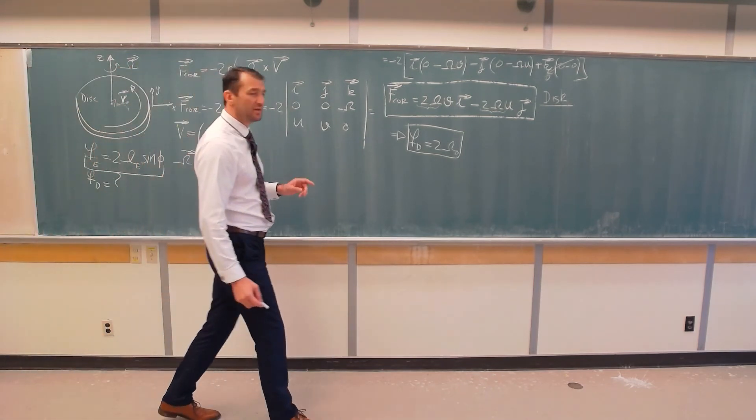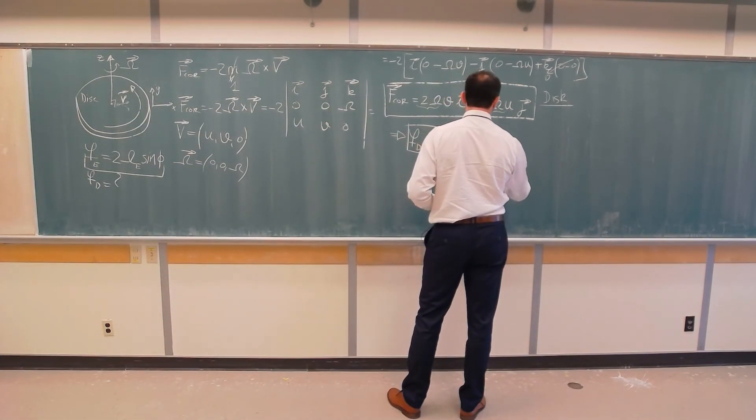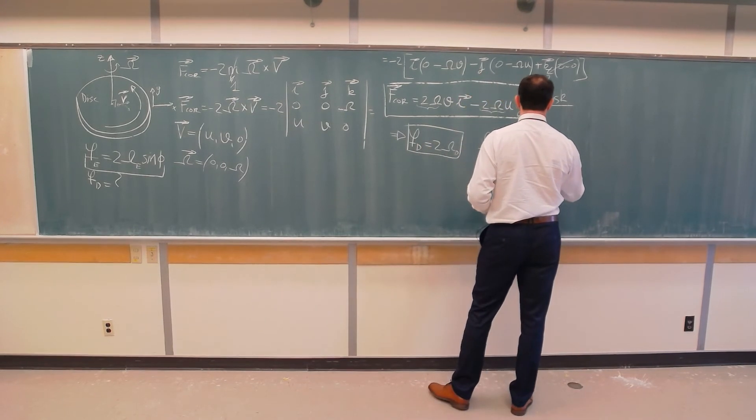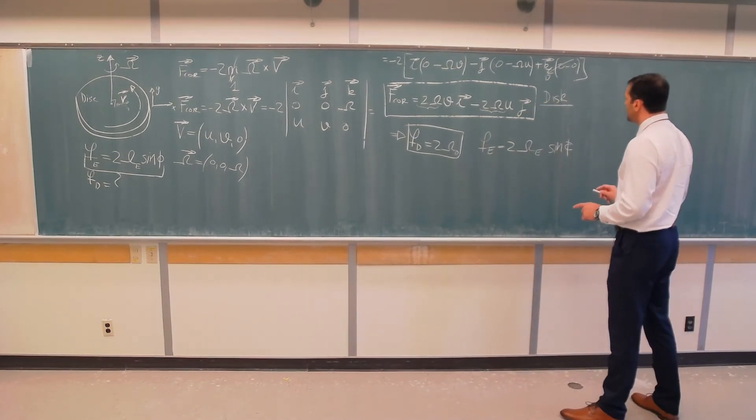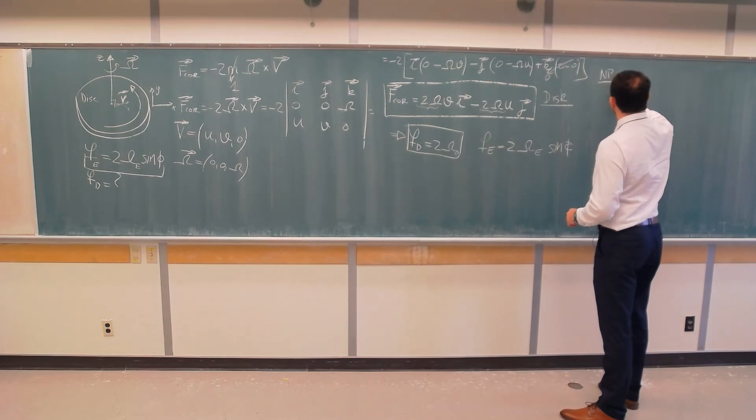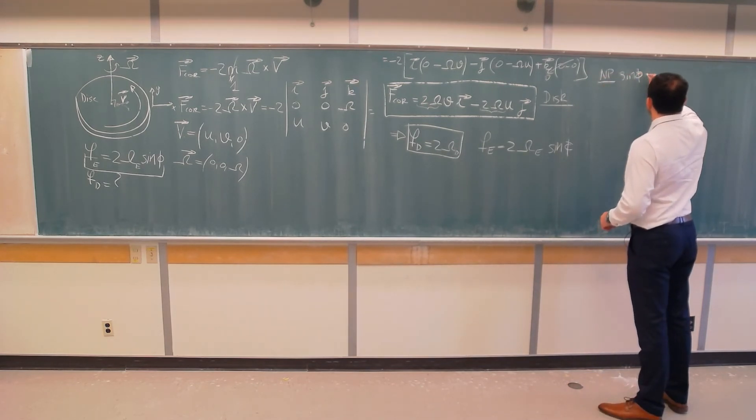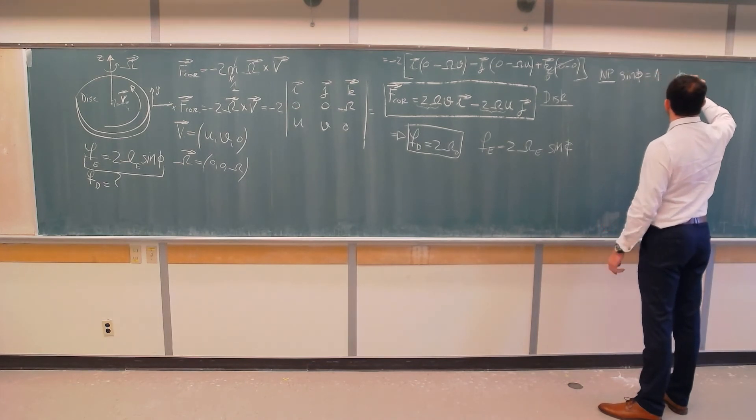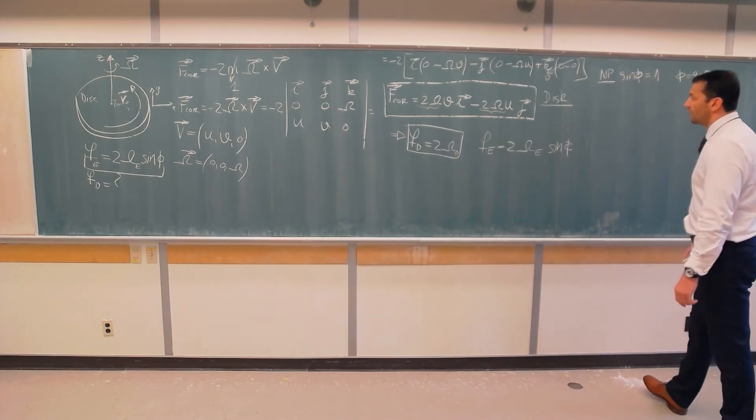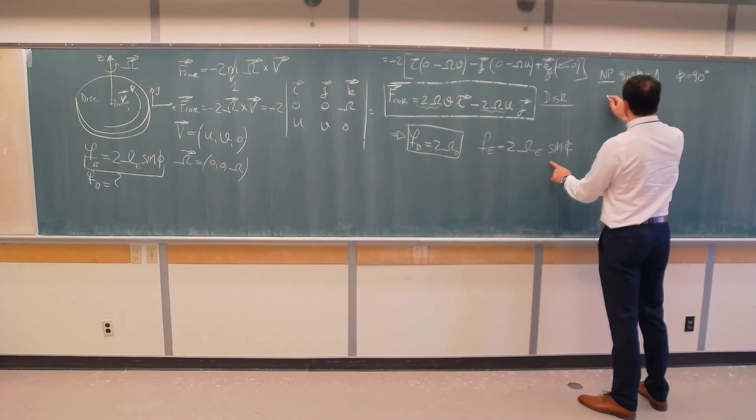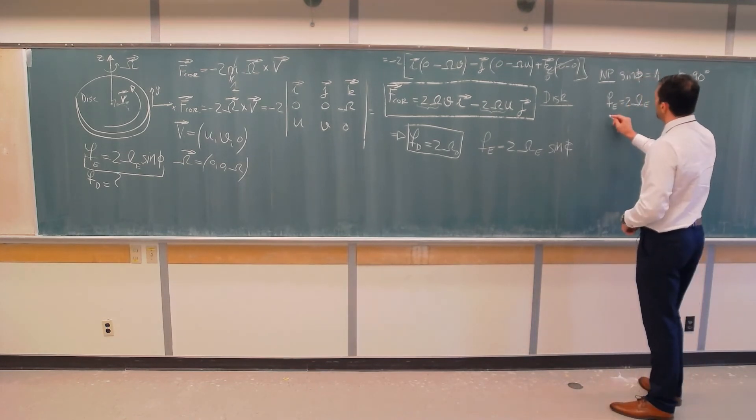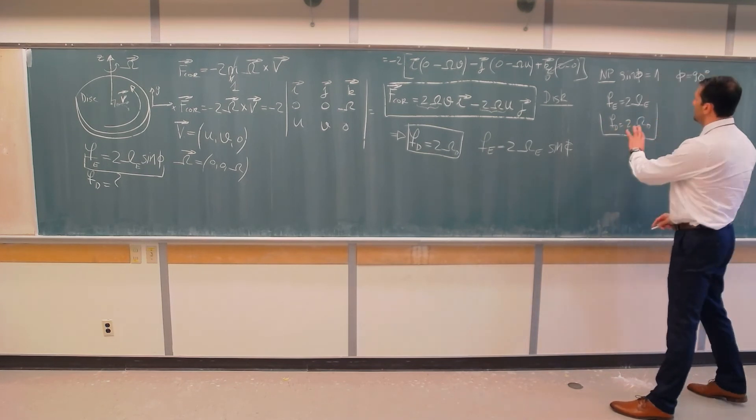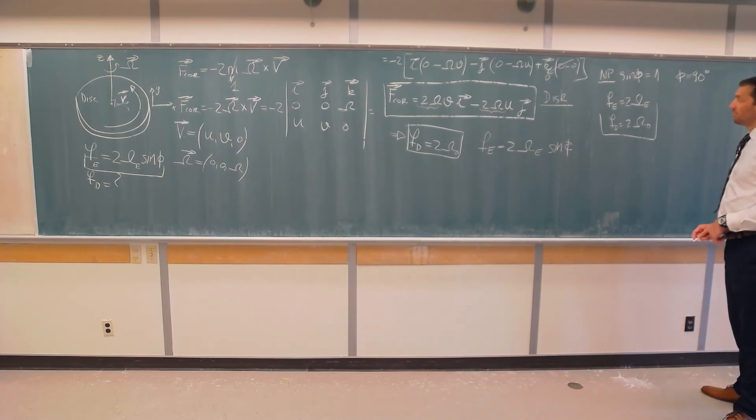Now, kindly notice something interesting. F of the earth, I will rewrite it, is two omega of the earth sine phi. But, let's take north pole. North pole, sine phi is equal 1, because phi is 90 degrees. So, at the north pole, Coriolis parameter for the earth is 2 omega of the earth. And Coriolis parameter for the disk is 2 omega of the disk. Do you see similarity? But, that's expected.